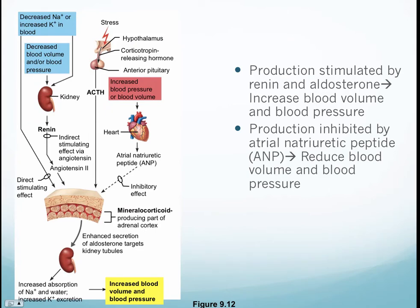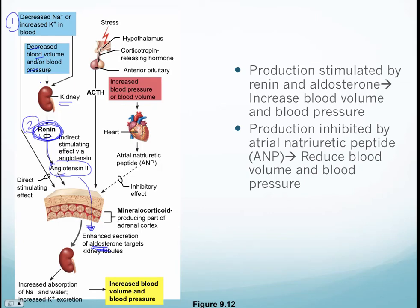An important point to highlight: decreased blood volume and blood pressure causes the kidney to secrete renin. Renin initiates a chain of reactions to activate angiotensin II, which directly causes production of aldosterone. So there are three stimuli for aldosterone release: first, low sodium or high potassium; second, decreased blood volume/pressure through the renin-angiotensin II pathway; and third, adrenocorticotropic hormone. ANP remains the antagonistic hormone opposing aldosterone.